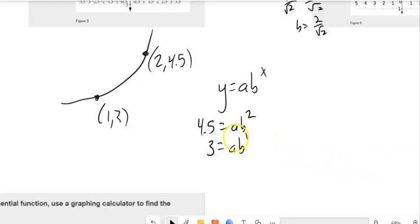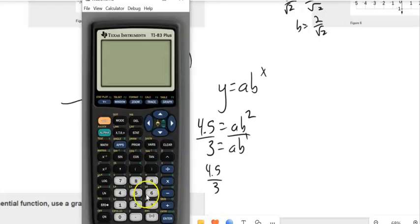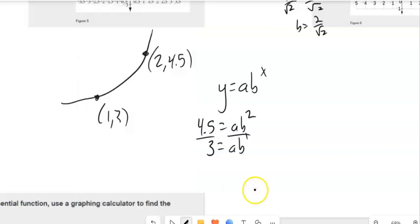What I can do with these equations now is some division. If I divide like this, 4.5 divided by 3 is 1.5. And if I go a divided by a, that's 1. b squared divided by b is b. So b must be 1.5.